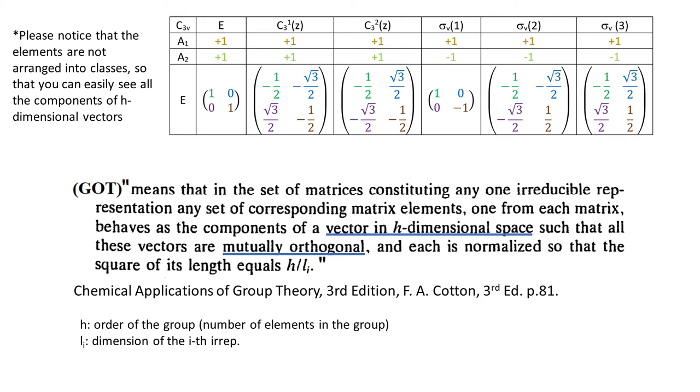Let's move on to the core of GOT. All of the colored vectors are mutually orthogonal. Recall that two vectors are orthogonal when the dot product of the two vectors is zero.